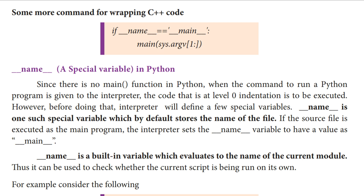__name__ is a special variable in Python. Why we need this special variable — since there is no main function in Python, we are using the interpreter to execute the Python code. That is why there is no main function in Python. When the command to run a Python program is given to the interpreter, the code that is at level 0 indentation is to be executed.